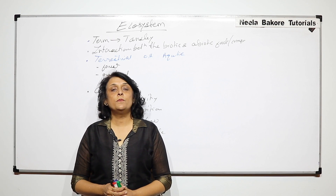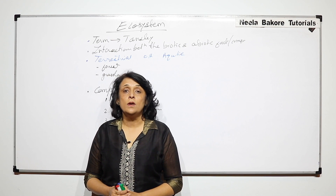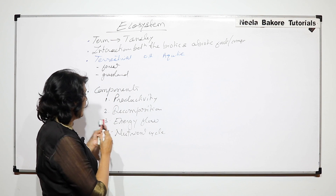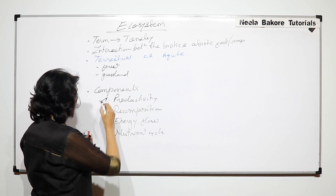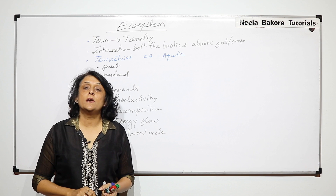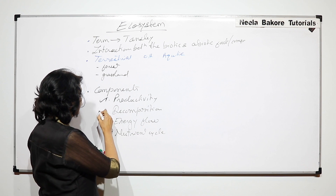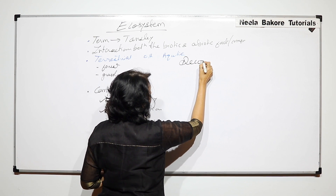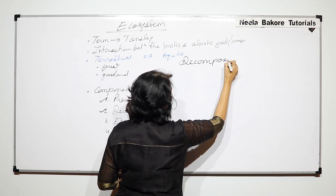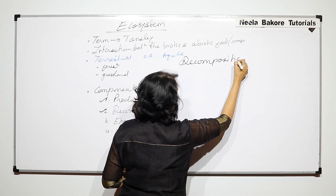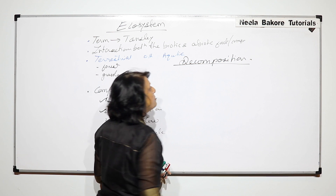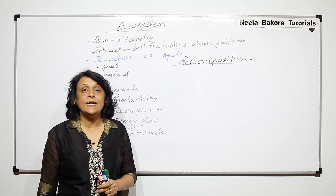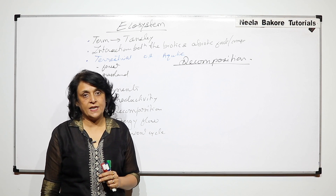In the previous part we talked about one component of the ecosystem — productivity. Now in this part we will talk about the second, that is decomposition. Basically, decomposition is the breakdown of organic matter to release the minerals which are present in it.